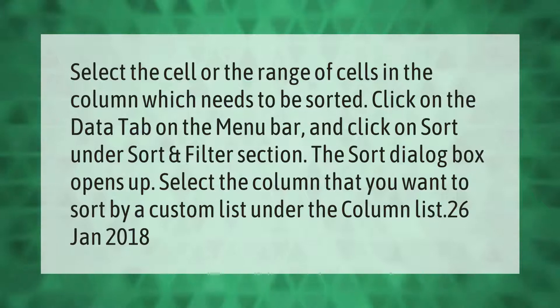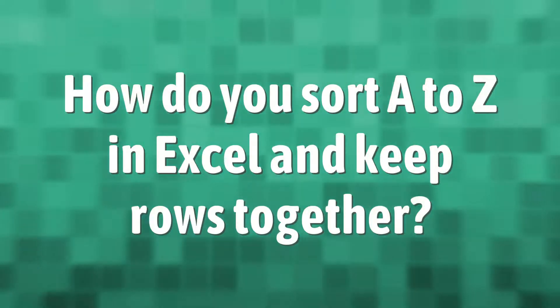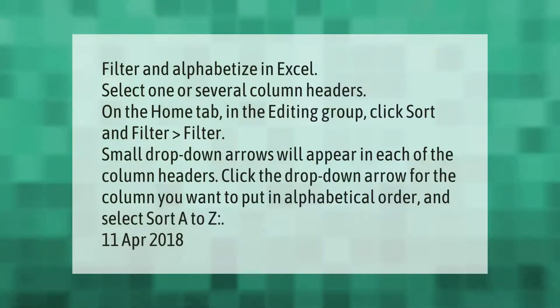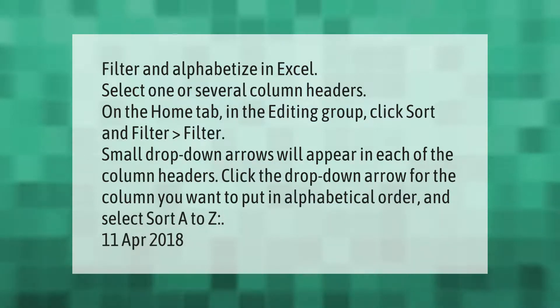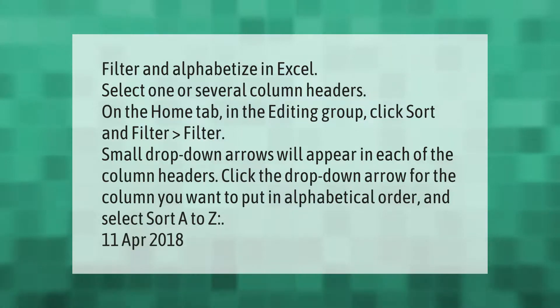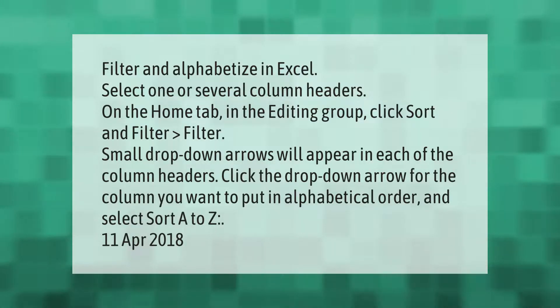To filter and alphabetize in Excel, select one or several column headers. On the Home tab in the Editing group, click Sort and Filter, then Filter. Small drop-down arrows will appear in each of the column headers. Click the drop-down arrow for the column you want to put in alphabetical order and select Sort A to Z.